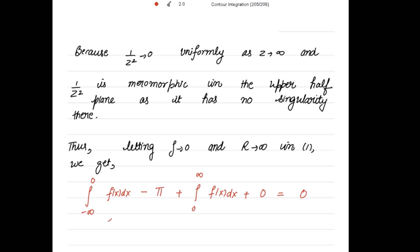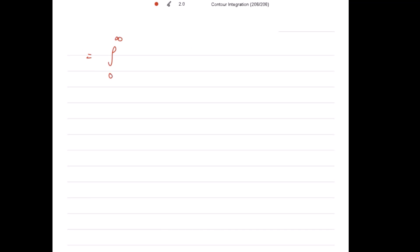Taking −π to the other side and merging the two real-axis integrals, we get the integral from −∞ to ∞ of (1 - cos x)/x² dx = π. Since this is an even function, this equals 2 times the integral from 0 to ∞ of (1 - cos x)/x² dx = π. Dividing both sides by 2, we get our required result: ∫₀^∞ (1 - cos x)/x² dx = π/2.